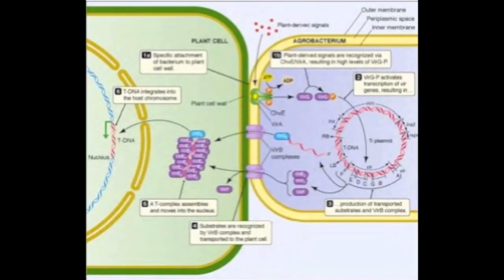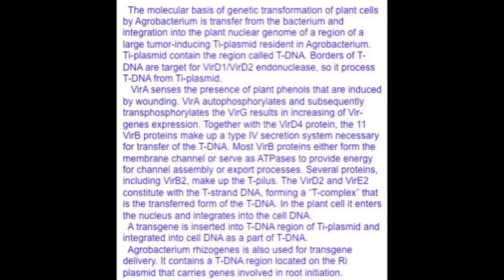Now we are talking about the mechanism of transgene delivery. It starts with Agrobacterium tumefaciens T-DNA. The molecular basis of genetic transformation of plant cells by Agrobacterium is the transfer from the bacteria and integration into the plant nuclear genome of a region of a large tumor-inducing Ti plasmid resident in Agrobacterium. The Ti plasmid contains the region called T-DNA; the borders of T-DNA are processed by VirD1, VirD2, and endonuclease, which processes the T-DNA from the Ti plasmid.